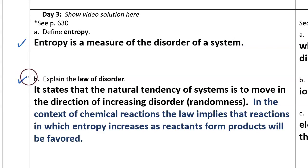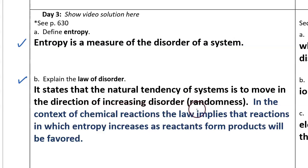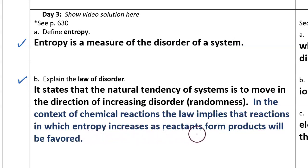Question b: Explain the law of disorder. Here is one way to answer: The law of disorder states that the natural tendency of systems is to move in the direction of increasing disorder — that is, increasing randomness. In the context of chemical reactions, the law implies that reactions in which entropy increases as reactants form products will be favored.